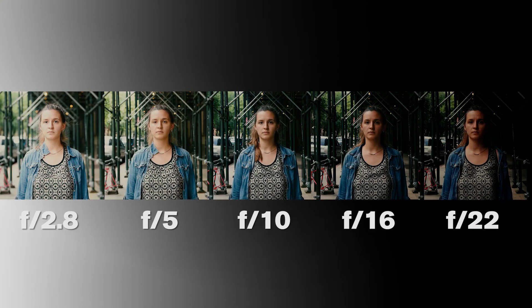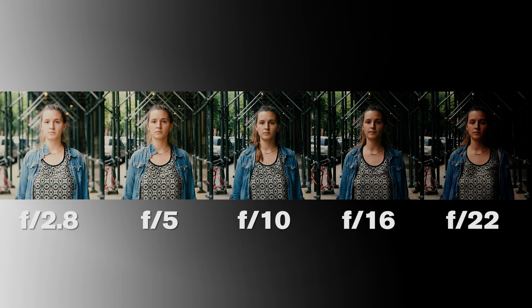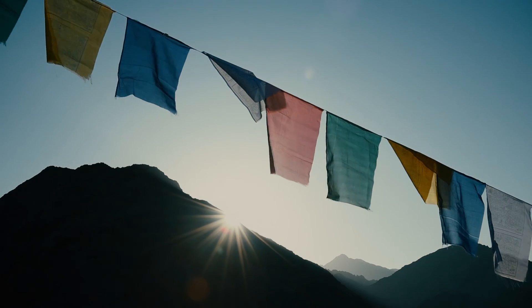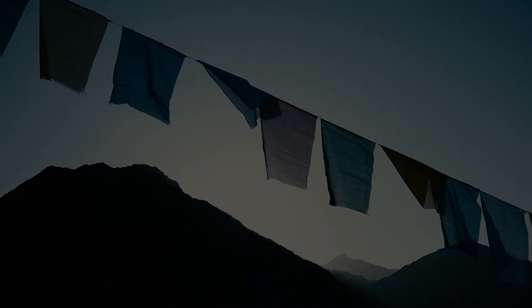Notice that as we increase the f-stop the darker the image appears. The lower your f-stop is the more light enters the camera, and the higher the f-stop the less amount of light. This means that while filming with a low f-stop you'll get better results if there is less light, while filming at a high f-stop you'll need more light for proper exposure.